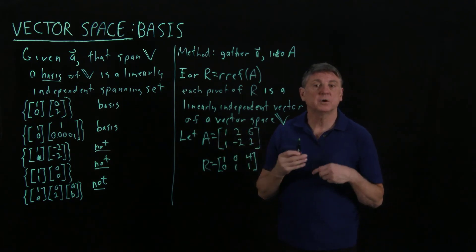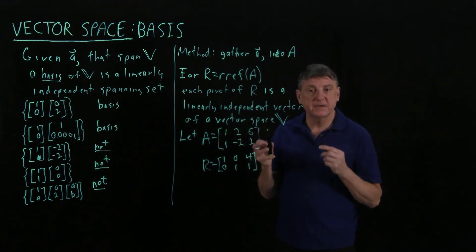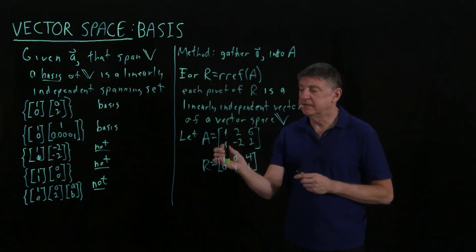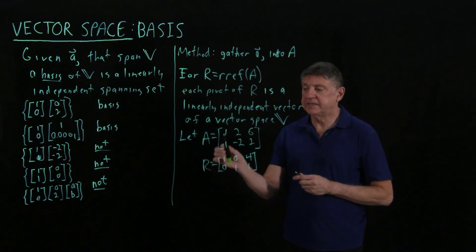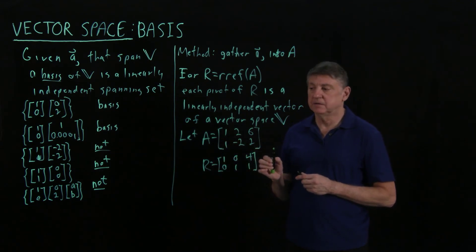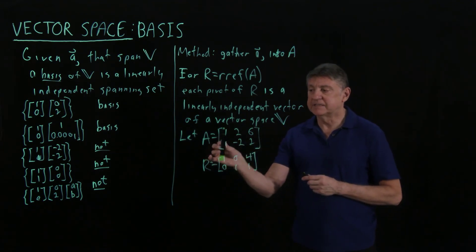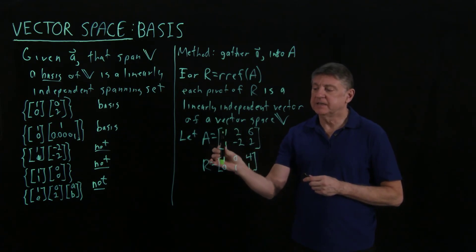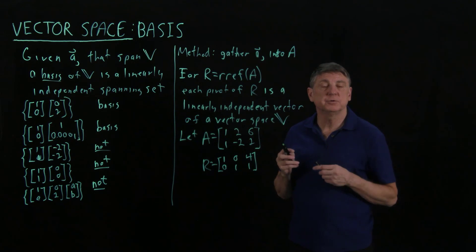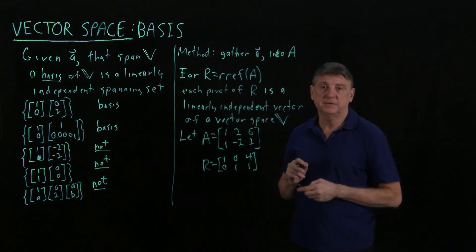In later sessions, we'll come to call that vector space the column space of this matrix. These are fundamental ideas for us: the RREF pivots identify linearly independent vectors in the set of columns, and the vector space that is spanned by those columns is referred to as the column space of the matrix.